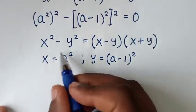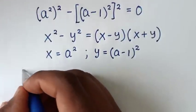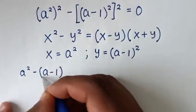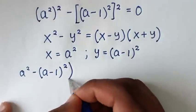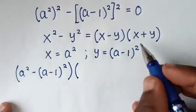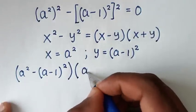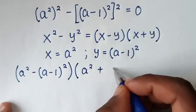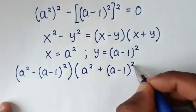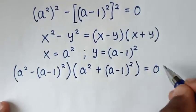So applying this form, x minus y gives us a² minus (a-1)², and x plus y gives us a² plus (a-1)². Therefore the factored form is (a² minus (a-1)²)(a² plus (a-1)²) equals 0.